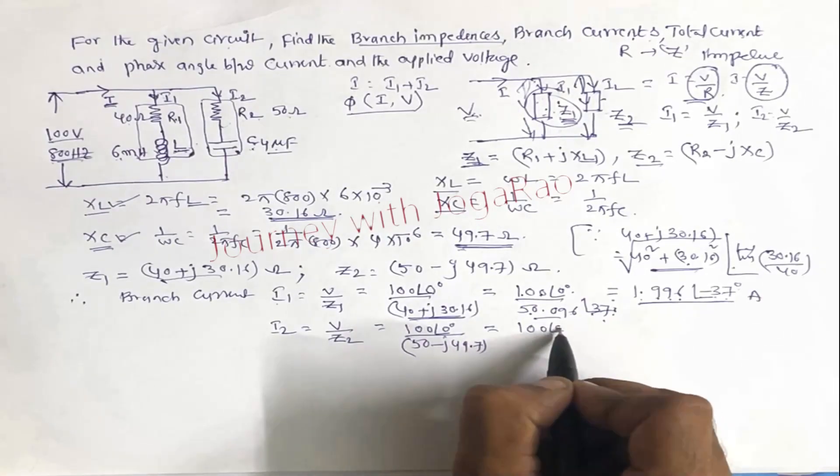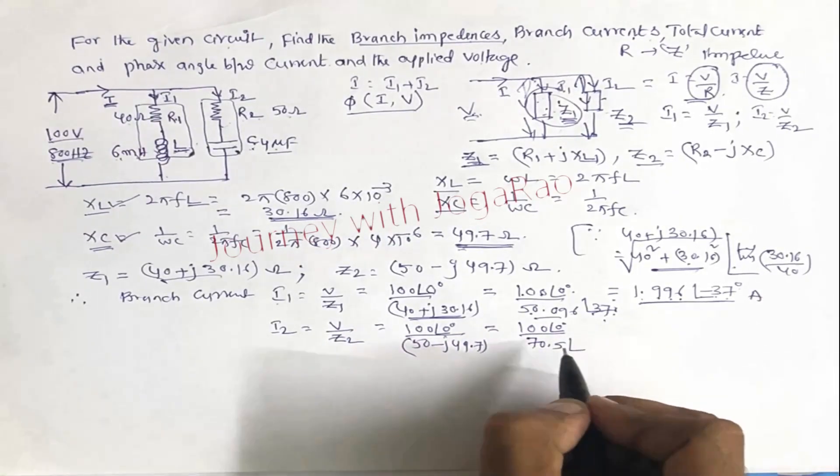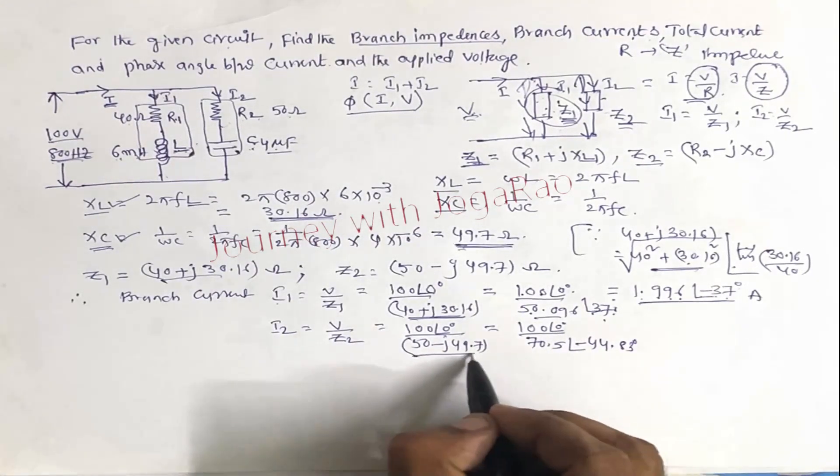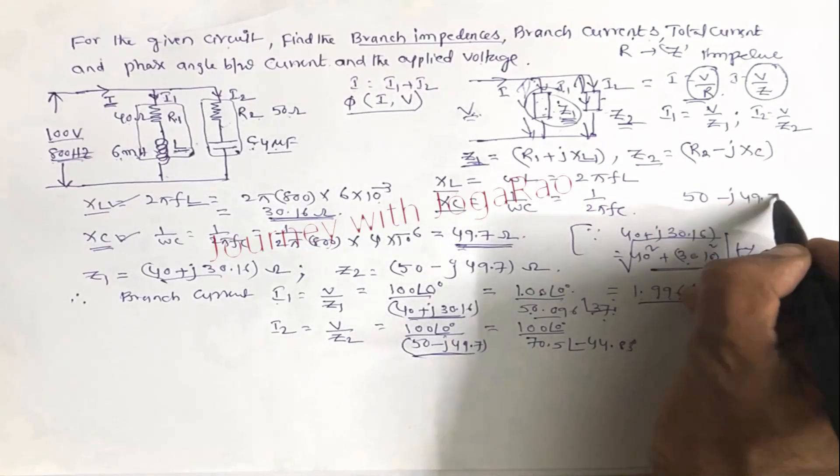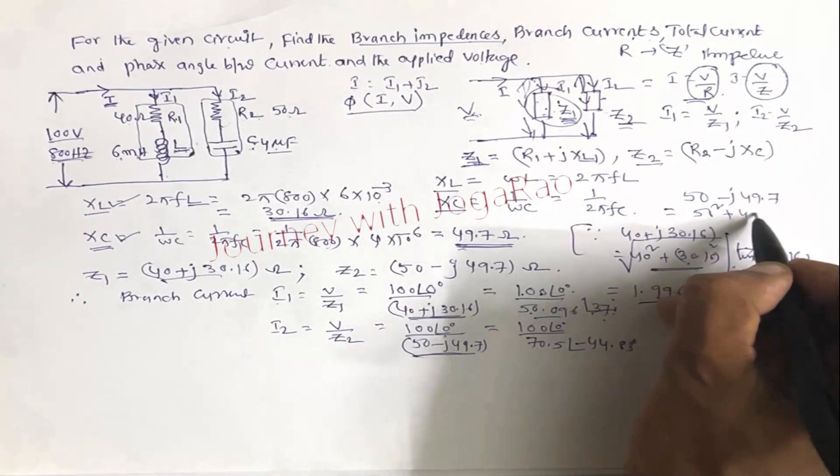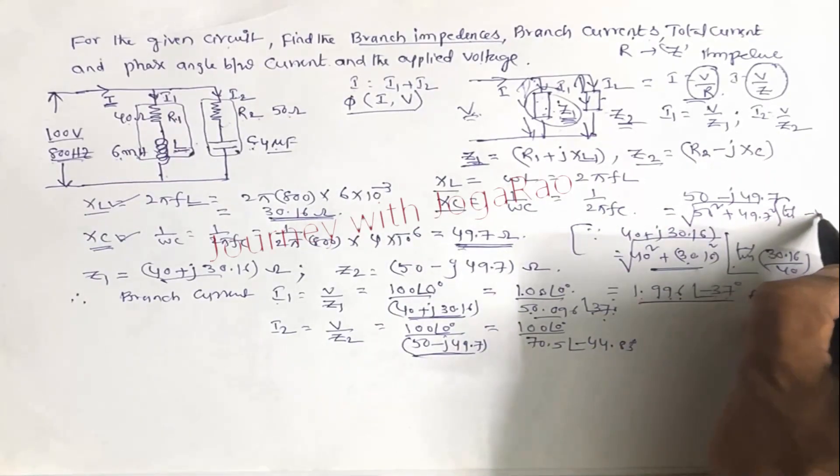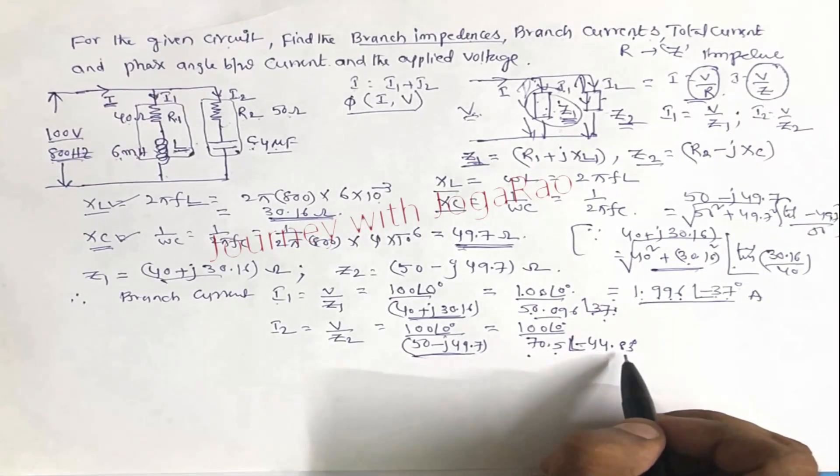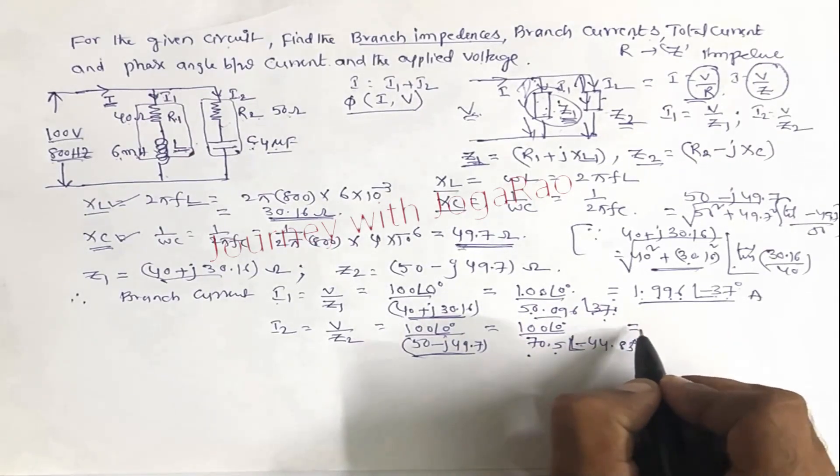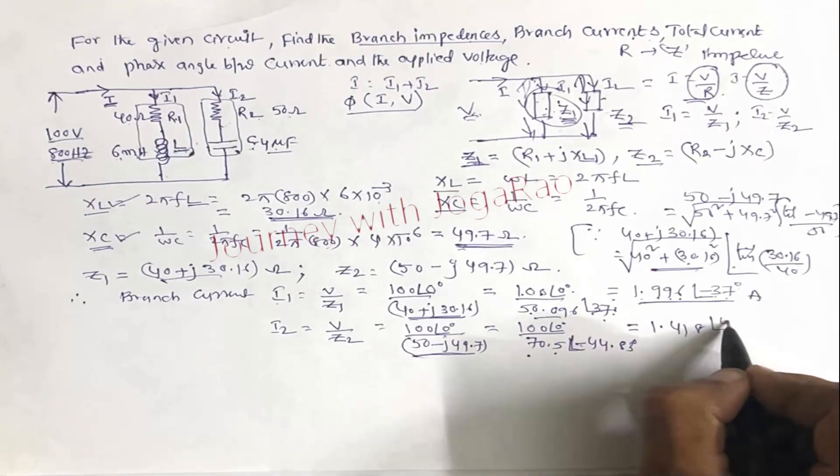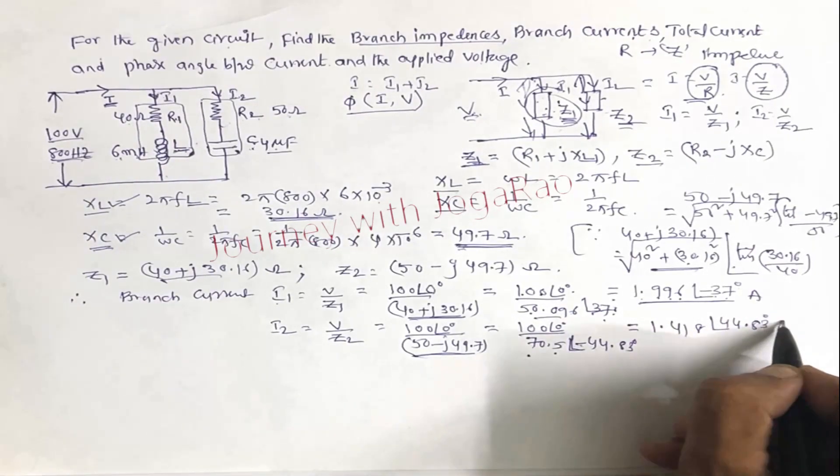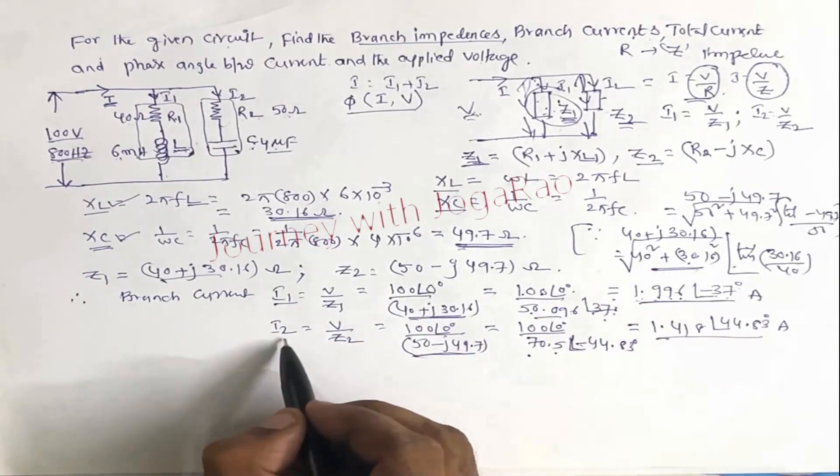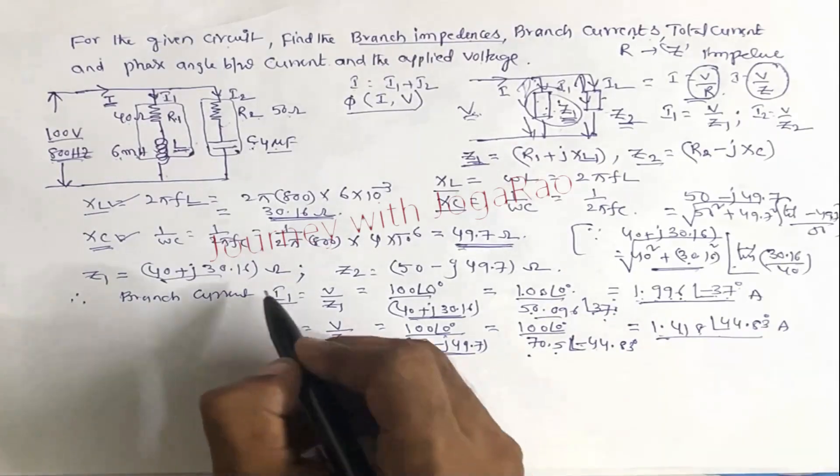Then simplify it. 100 at an angle 0 by 70.5 at an angle minus 44.83 degrees. The simplification, polar formula is 50 square plus 49.7 square at an angle minus 49.7 by 50. That is 70.5 at an angle minus 44.83. Then simplify, 1.418 at an angle 44.83 degrees amperes.